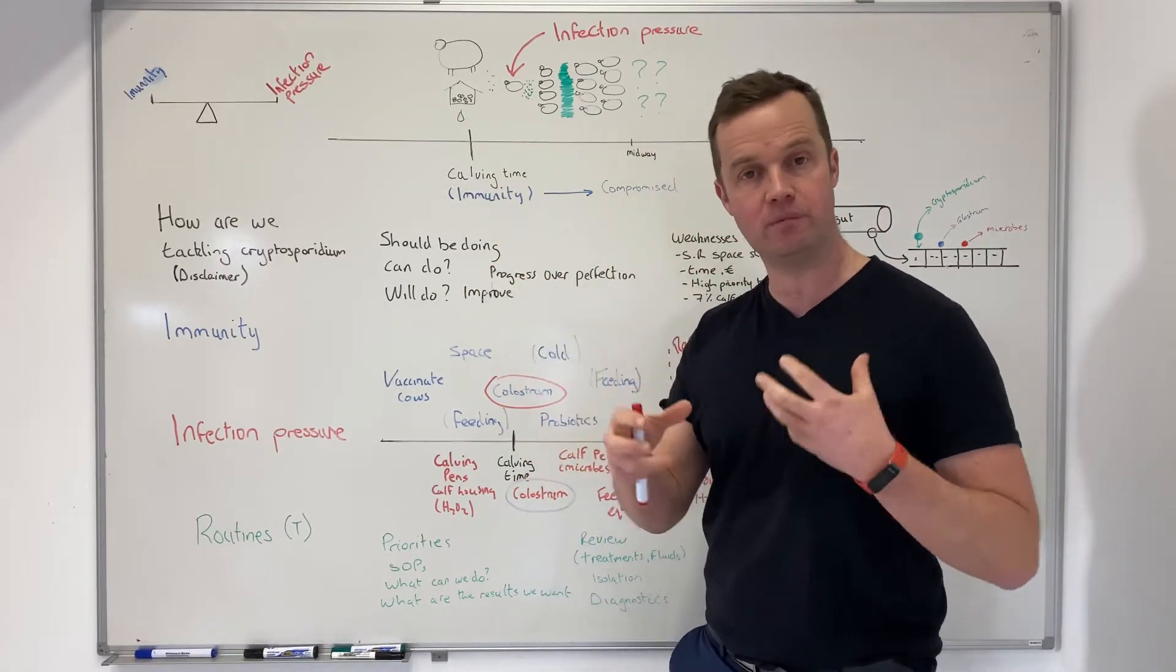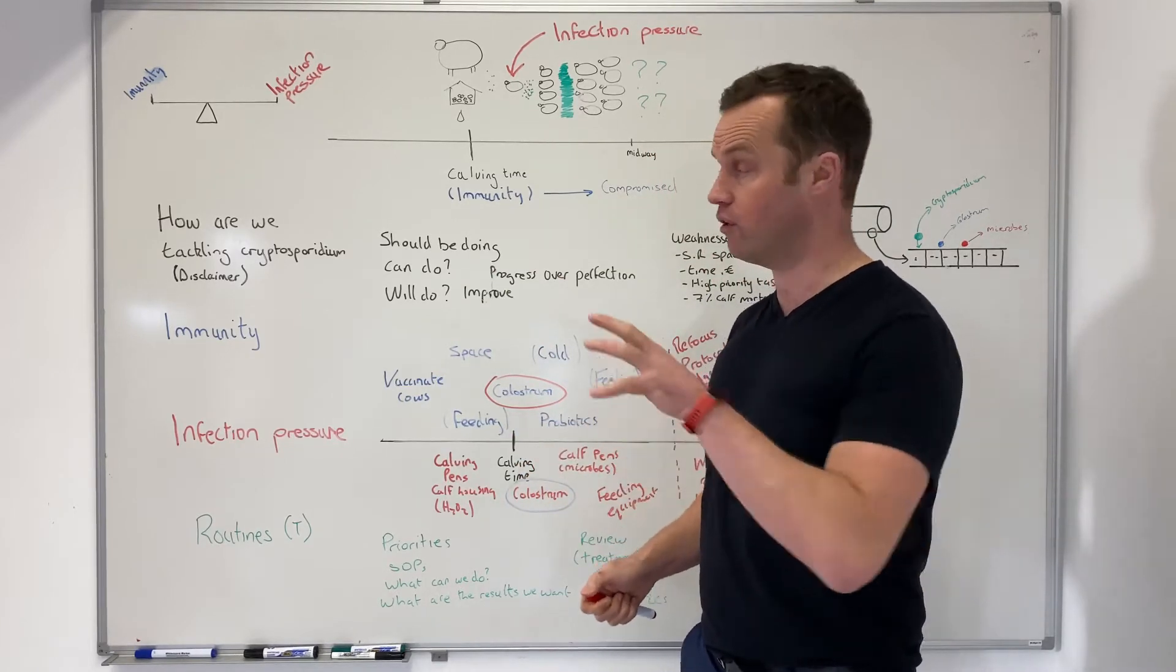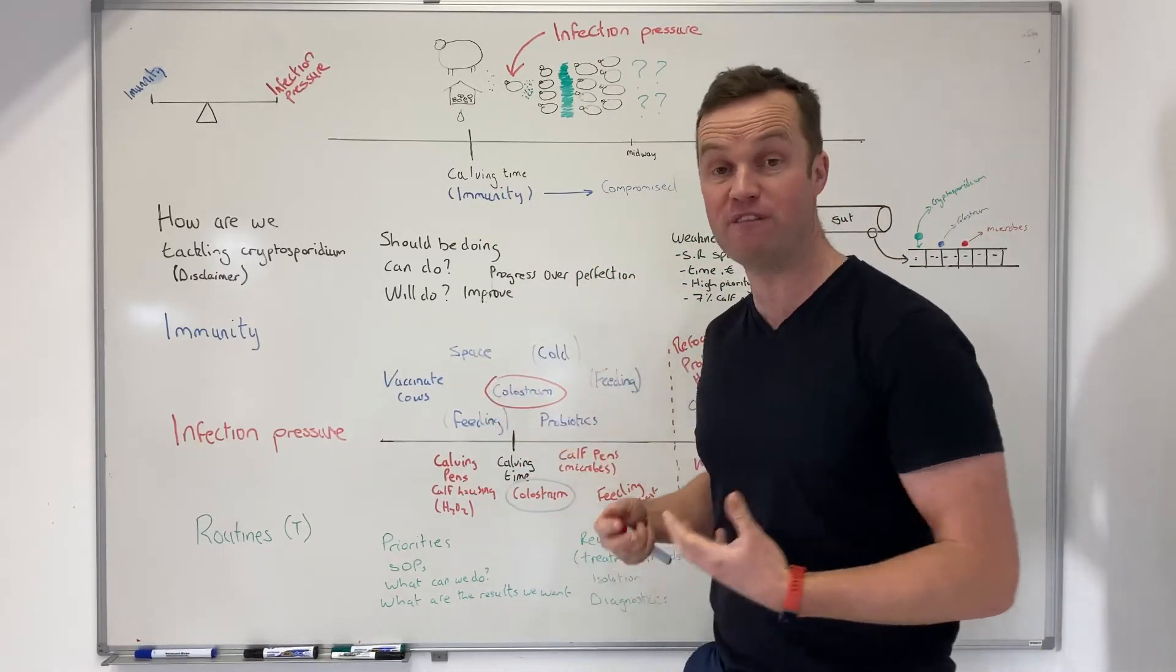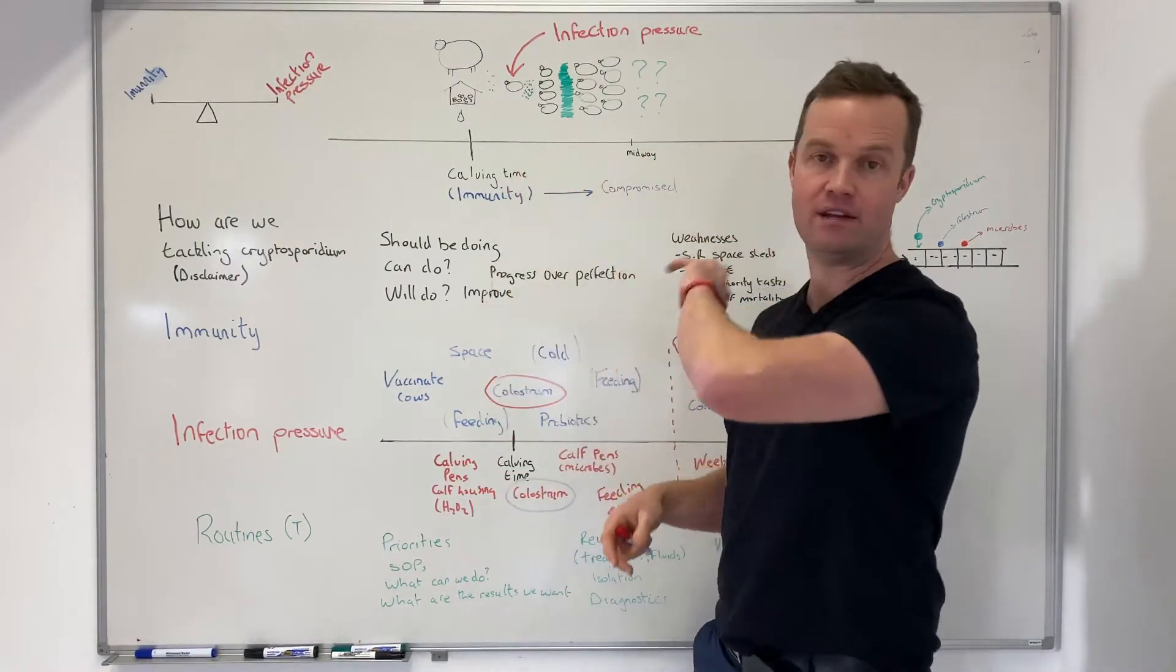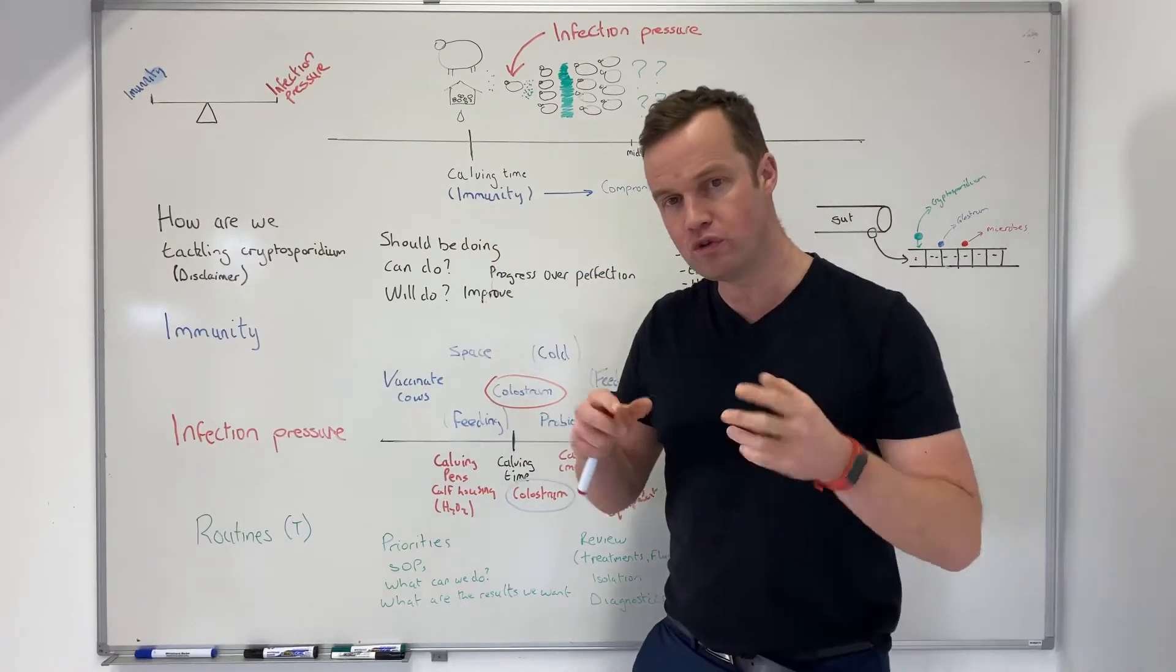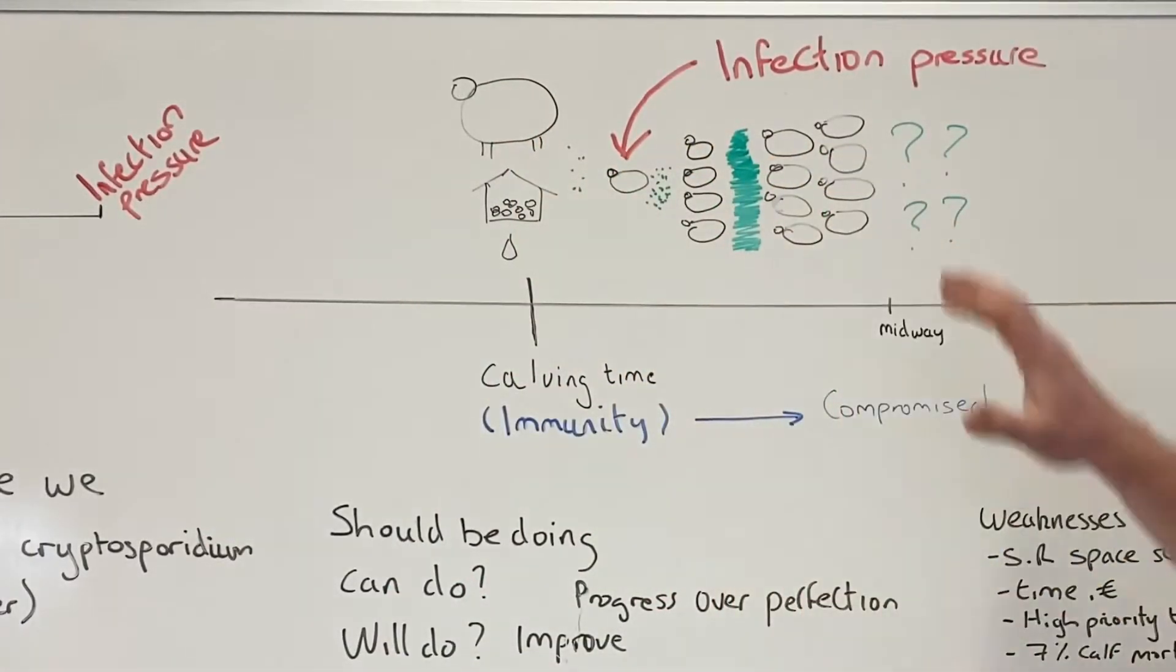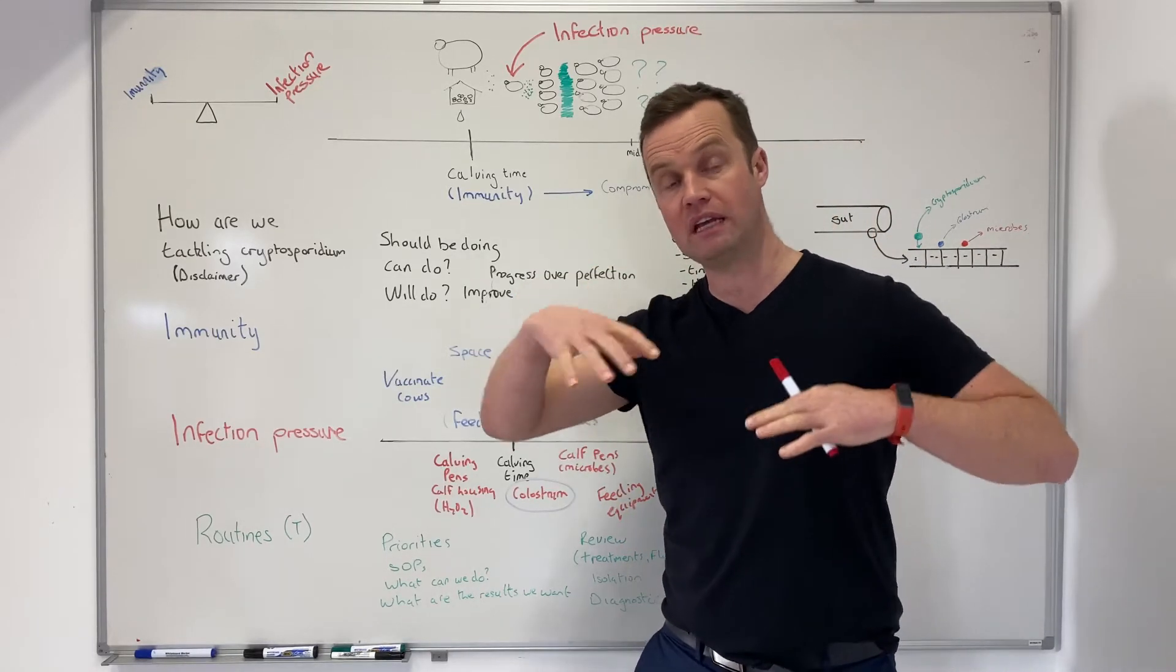So small levels of these parasites, crypto or maybe even viruses, are in cows or in the environment. What happens is you have this massive multiplying effect, and this is how infection pressure builds. This is why we see calf scour, particularly in the middle and later sections of the season. A calf can ingest 100 of these microscopic organisms and produce a billion. So calves multiply that infection pressure up to a point where even with good immunity, it can be overwhelmed.